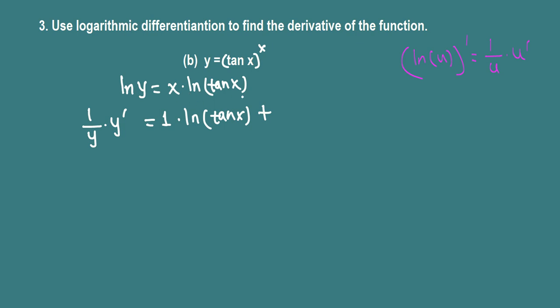So derivative of the second part, we are using product rule here, and derivative of second function is 1 over tangent x times derivative of tangent x which is secant square x times the first function x.